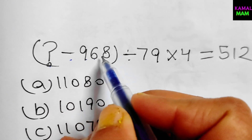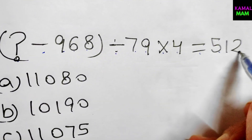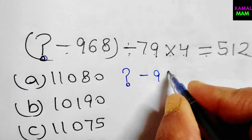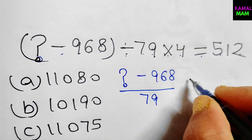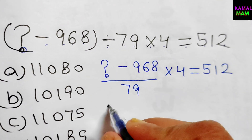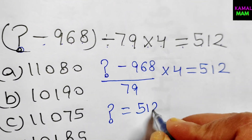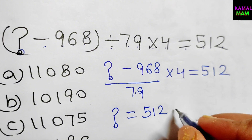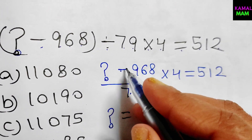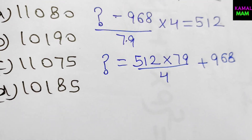The problem is: question mark minus 968, divided by 79, multiplied by 4, equals 512. We have to find the value of the question mark. First, take the question mark on one side and all other terms on the other side. We get: question mark equals 512 multiplied by 79, divided by 4, plus 968. The negative sign becomes positive.